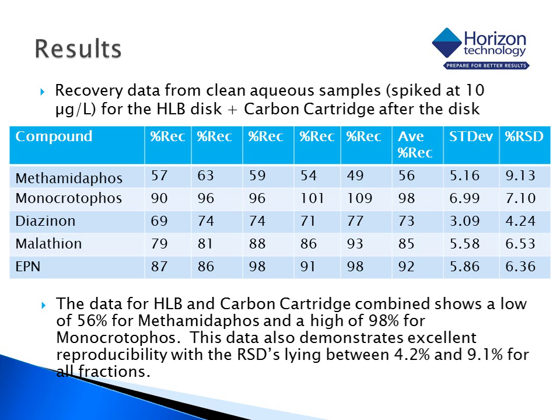Total methamidophos from HLB disks and carbon fractions combined, with samples spiked at 10 micrograms per liter, showed recoveries ranging from 56 percent for methamidophos to 98 percent for monocrotophos, with excellent precision of 4.2 to 6.5 percent.